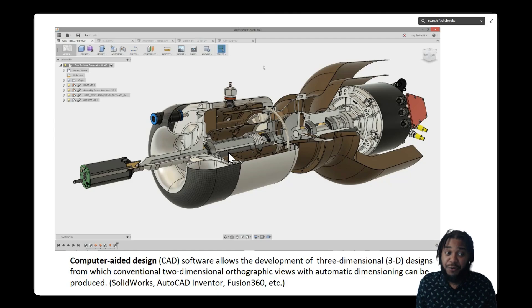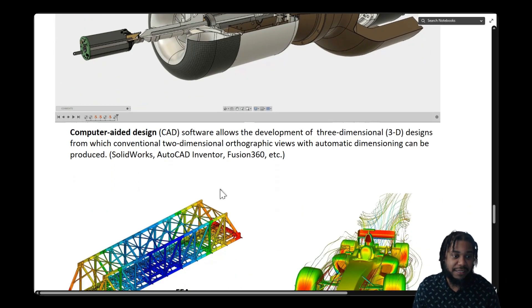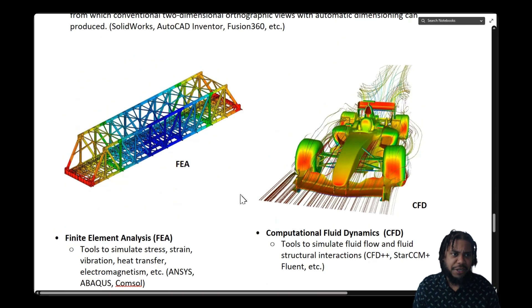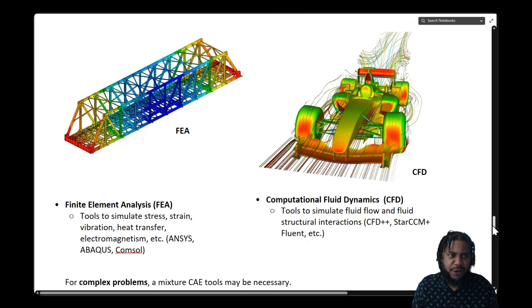These components that we make can actually be machined by a machinist. With additive manufacturing, we can take those 3D models directly, slice them using a slicer, and 3D print those complex components, part of that design-build-test philosophy. Beyond the design itself or the geometry itself, we also need to know can this geometry actually survive the environment that it's subjected to.